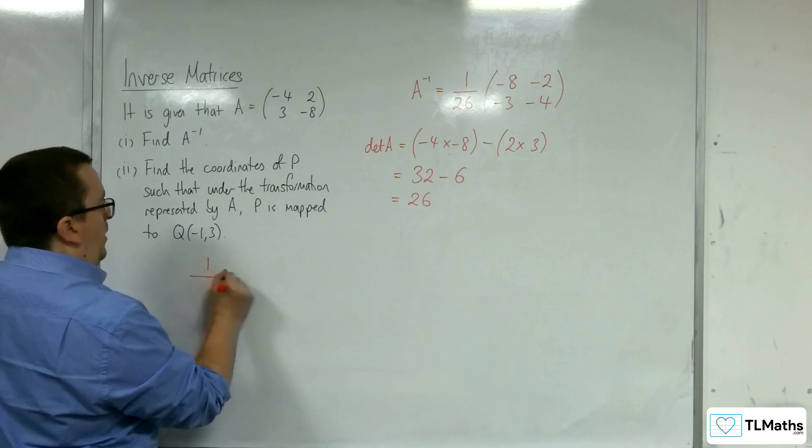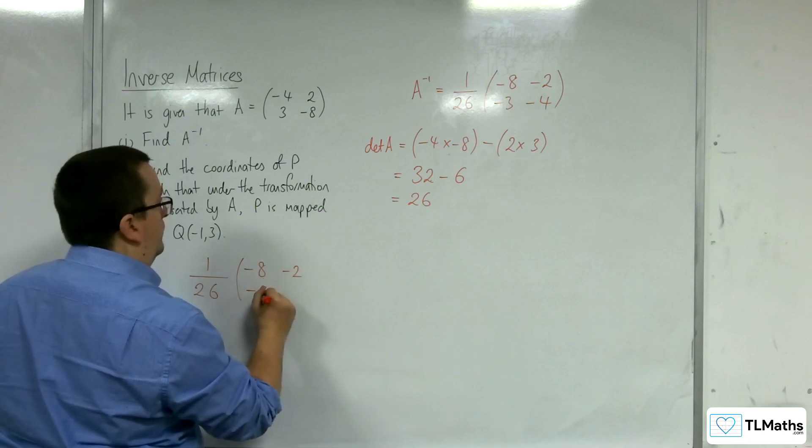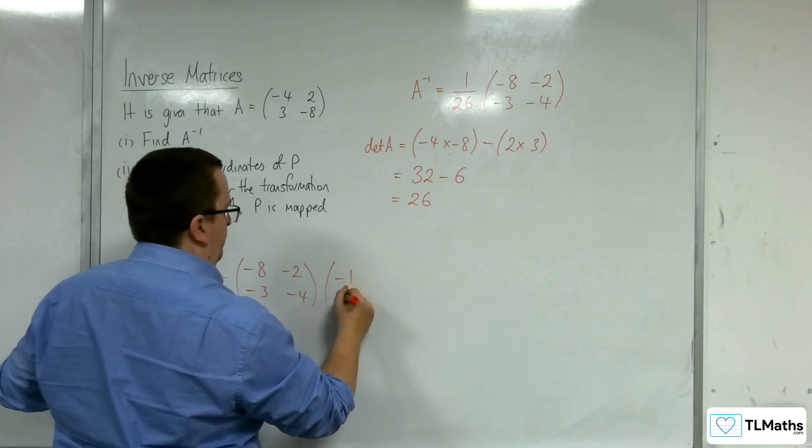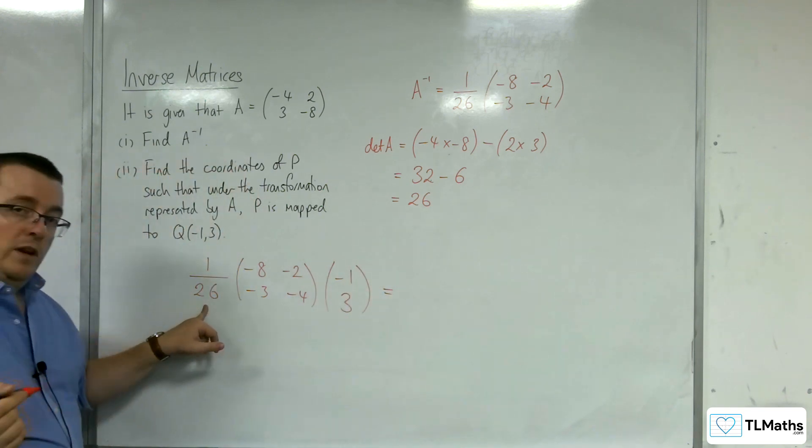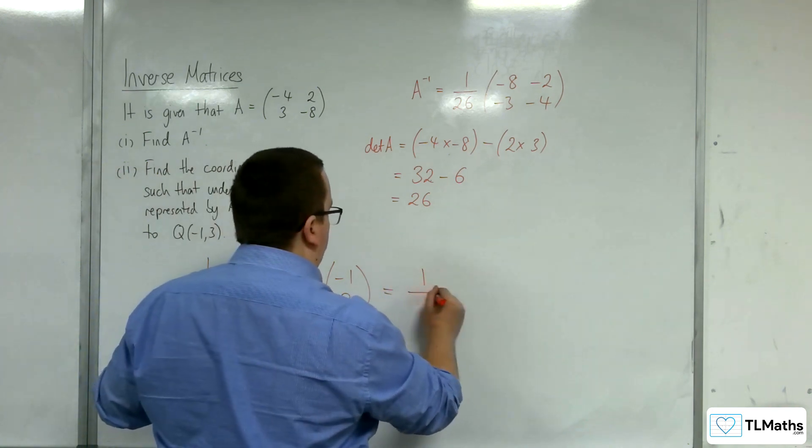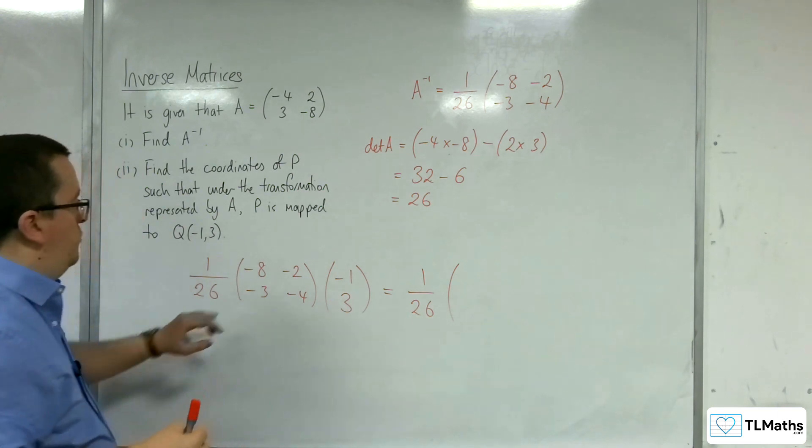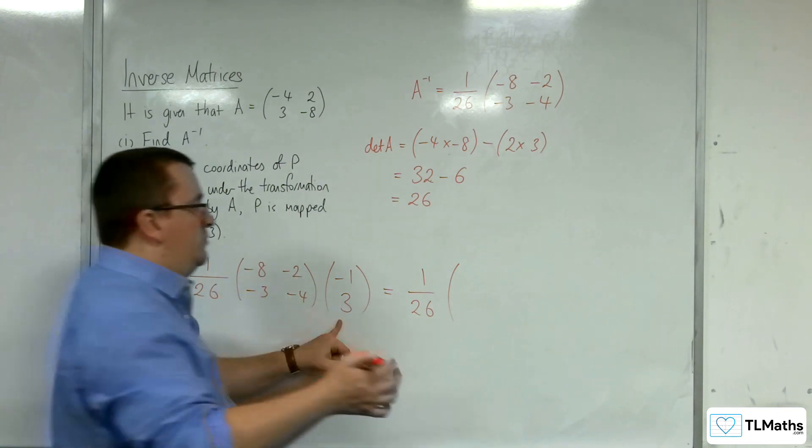So, I'm going to apply the inverse matrix of A to Q. If I leave the 1 over 26 where it is for the time being, and then I've got minus 8 minus 2 times by the minus 1, 3. So, that would be 8, and then take away 6, so 2.